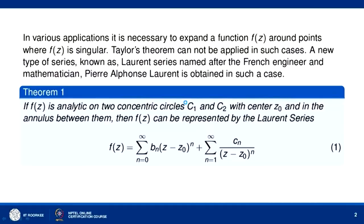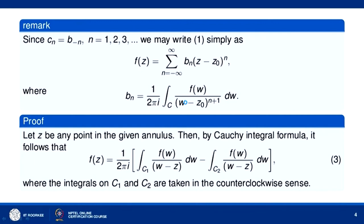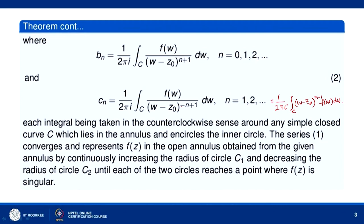Let us see how we prove this theorem. The series can be written in an alternate form: f(z) = Σ(n=-∞ to ∞) b_n (z - z0)^n. Notice that c_n is nothing but b_{-n}; you can see this from the expressions of c_n and b_n — when you replace n by -n in b_n you get c_n.